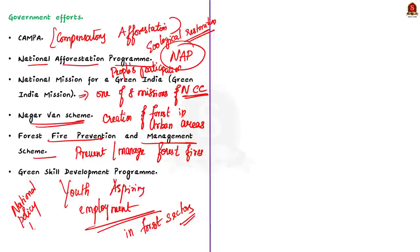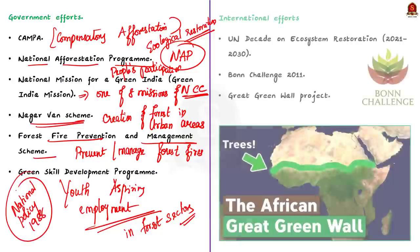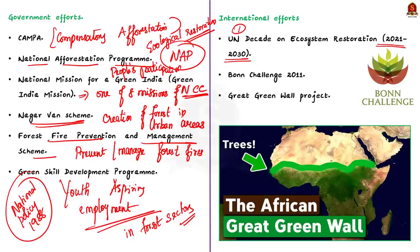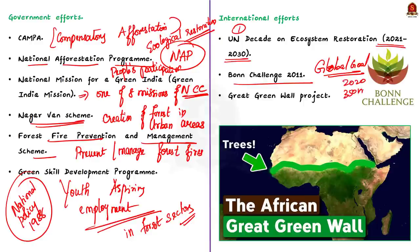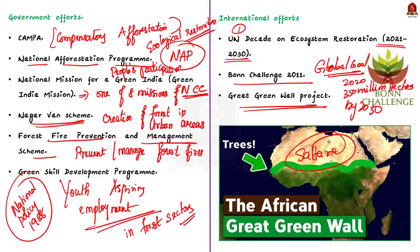Now let's see measures taken in the international arena. First, the UN Decade on Ecosystem Restoration spans from 2021 to 2030. Then there is the 2011 Bonn Challenge, launched with a global goal to restore 150 million hectares of degraded and deforested landscapes by 2020, and 350 million hectares by 2030. There is also the Great Green Wall Project in the Sahara, which aims to restrict the extension of the Sahara Desert southward by planting trees along its border.